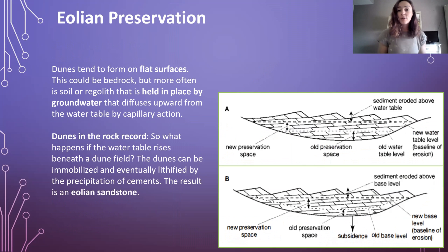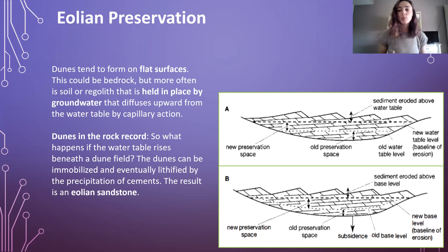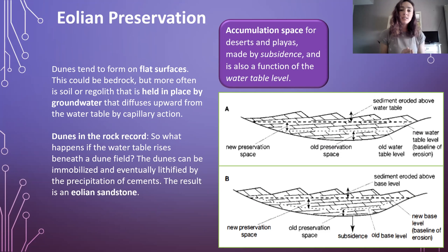Now we'll talk about how dunes and aeolian deposits can be preserved. Dunes tend to form on flat surfaces — this could be bedrock, but more often soil or regolith held in place by groundwater. Groundwater diffuses upward from the water table by capillary action, and dunes can be preserved if the water table rises beneath the dune field. When this water table rises, the dunes can be immobilized and eventually lithified by precipitation of cements between the sand grains, causing aeolian sandstone. Accumulation space caused by subsidence and water table changes can also create even better preservation for deserts and playas.